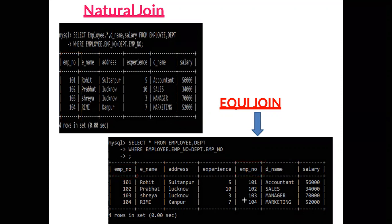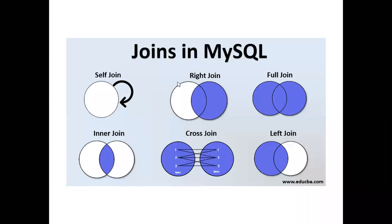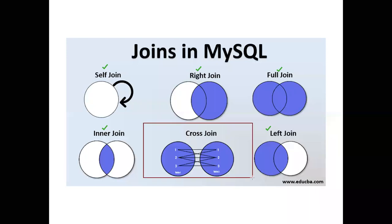All four joins — equi-join, non-equi-join, Cartesian product, and natural join — are now clear. The other joins we will study later include: self join (joining a table with itself), right join, left join, inner join, full join, and cross join which is already done.